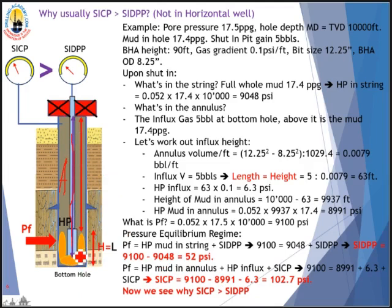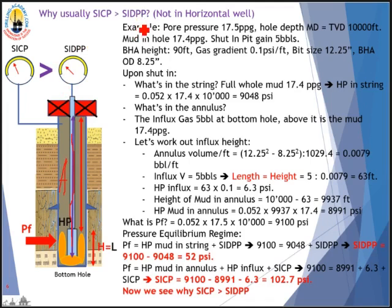When we have an influx and shut the well in, inside the drill string we have only full mud — a full column of mud. But in the annulus, we no longer have full mud; we have the influx. This is why shut-in casing pressure is greater than shut-in drillpipe pressure. This applies in vertical or deviated wells, but not in horizontal wells — we'll explain that later.